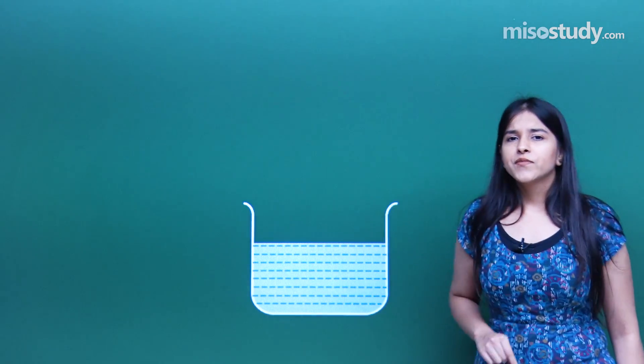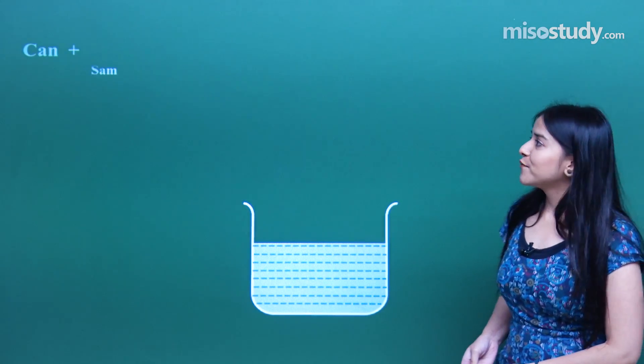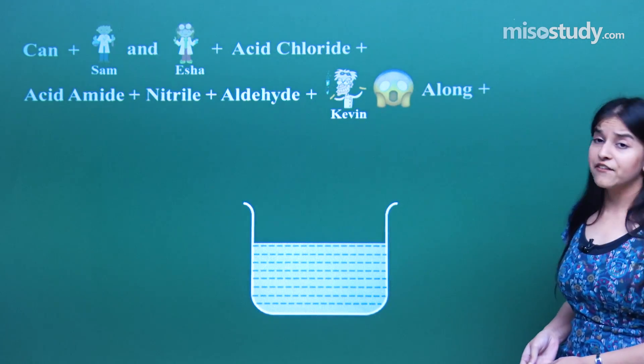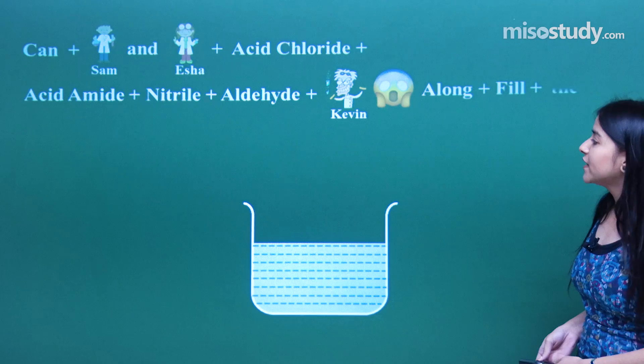What kind of rubbish is this? Are you ready for the rap again? Let's drop the beat. Can Sam and Isha with acid chloride and acid amide, nitrile, aldehyde, and Kevin along fill the amino alkene alkynes.